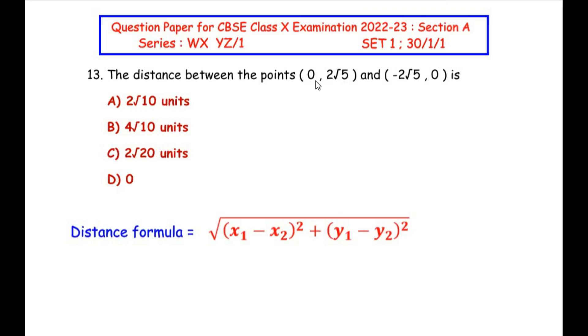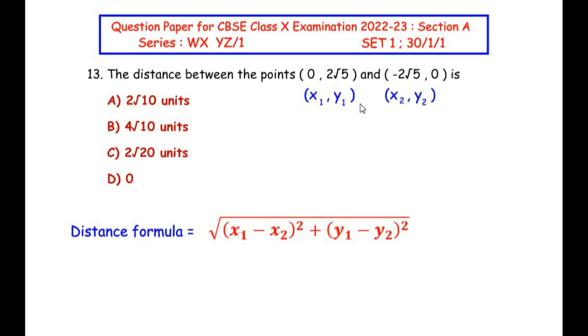Now let me consider the coordinates of first point as x₁ and y₁ and the second coordinate as x₂ and y₂. Now let us substitute the values of x₁, y₁ and x₂ and y₂ in the given formula.